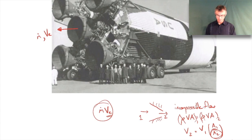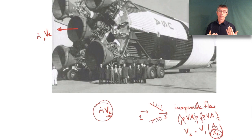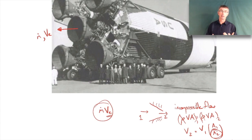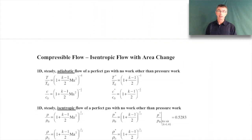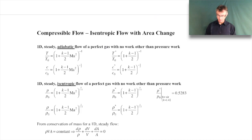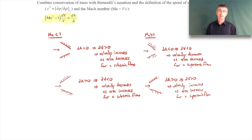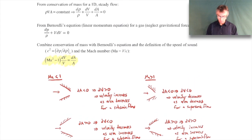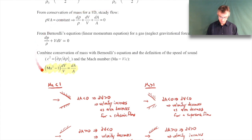You might ask why they don't make the nozzles even bigger. Well, there are engineering trade-offs: you could make the area bigger, but then you have more structure to carry, and you pay a weight penalty. It's just not worth it from an engineering systems perspective. But certainly if you made the area bigger you would get a higher exit velocity. To prove this, we just combined conservation of mass with the other sub-quantities to relate them.